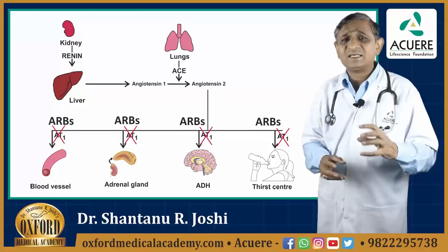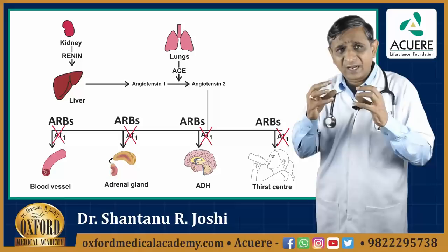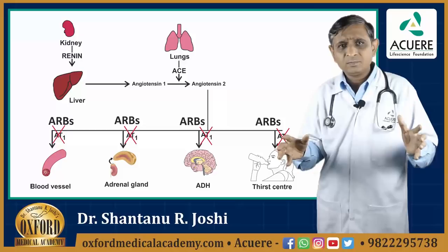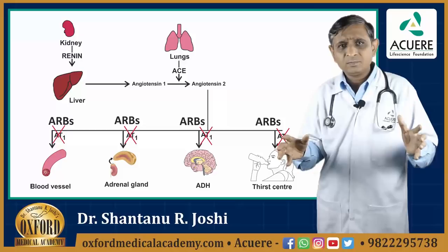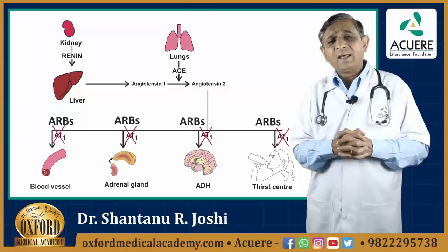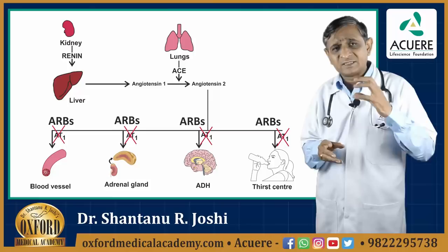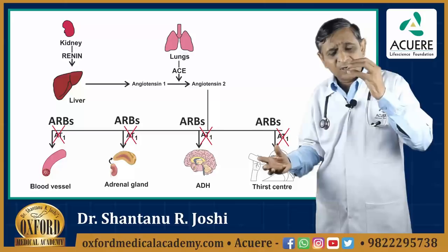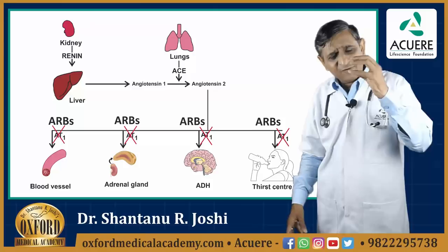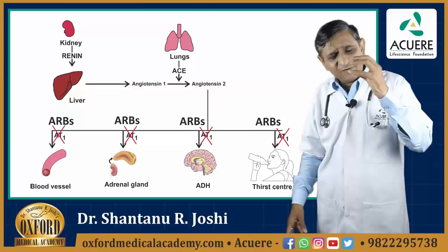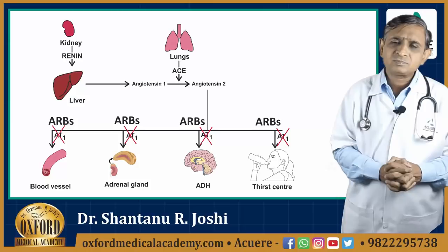Telmisartan blocks the AT1 receptors on which angiotensin-2 acts. Naturally, the actions of angiotensin-2 will be blocked and ultimately blood pressure will be reduced. If you block the actions of angiotensin-2 in the peripheral blood vessels, there will be a decrease in total peripheral resistance by dilating the peripheral blood vessels. When peripheral blood vessels are dilated, total peripheral resistance reduces, and there will be reduction in both systolic and diastolic blood pressure.